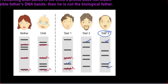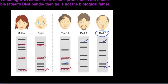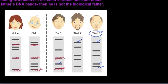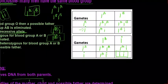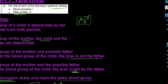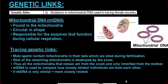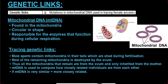We did this when we covered DNA, so this should not be too difficult. Let's move on to genetic links and see what that is all about. Under genetic links, you need to know that mutations in the mitochondrial DNA are used in tracing female ancestry.